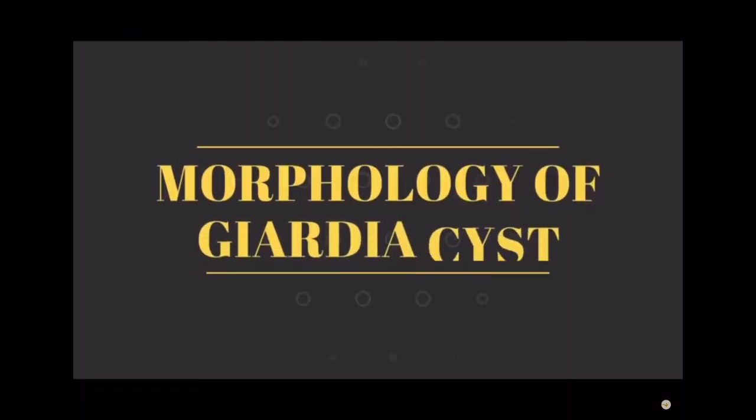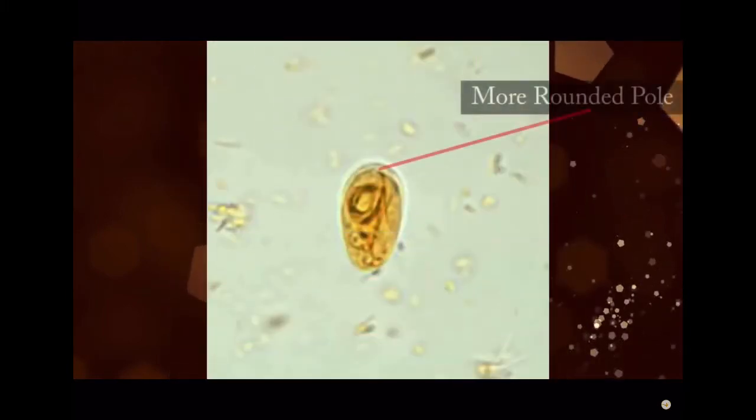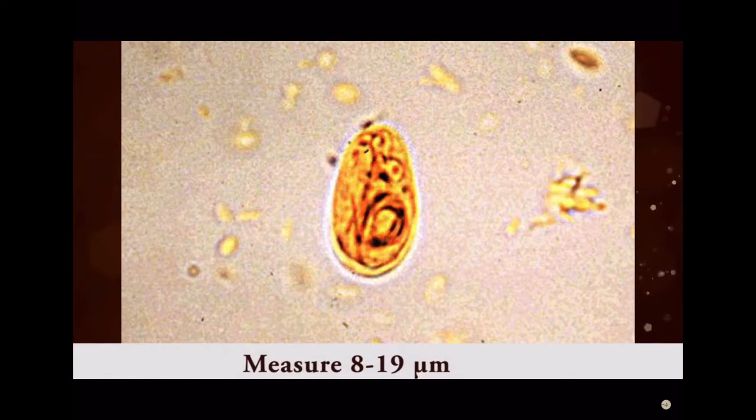In this video we are going to discuss morphology of Giardia cyst. Giardia cysts are oval to ellipsoid in shape, one pole more rounded than the other, and measure 8 to 19 micrometers.